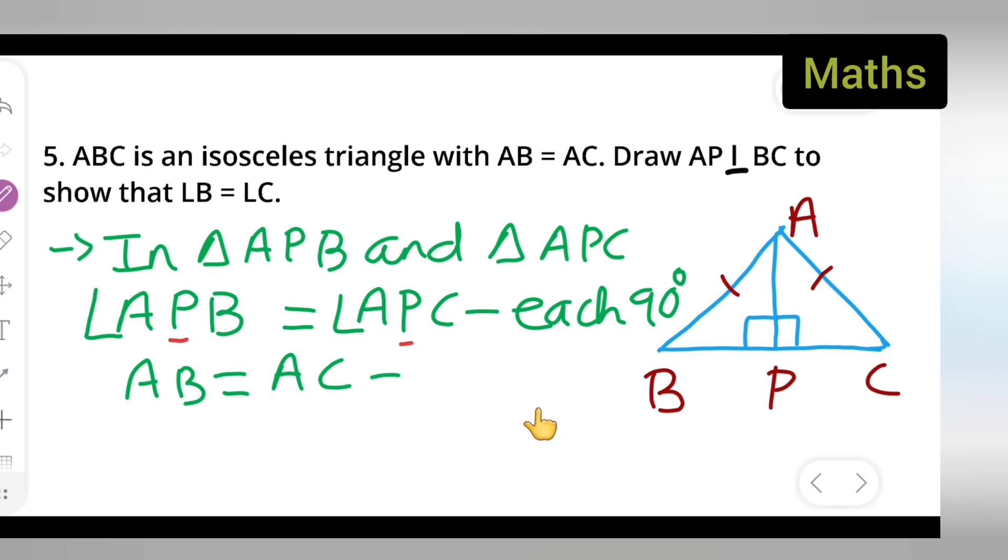Next, AB is equal to AC is given. Next I will write AP is equal to AP. You can see that AB is equal to AC is from the question, it is given. Then AP is a common side in both the triangles.